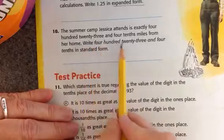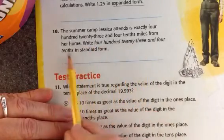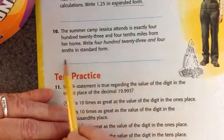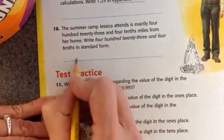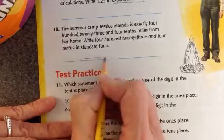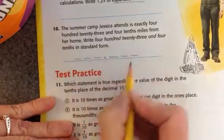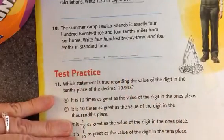The summer camp Jessica attends is exactly 423 and four tenths miles from her home. Write 423 and four tenths in standard form. You'll go ahead and do that. If you want to start out with a frame to help you put the numbers down, that's always a good thing to do.